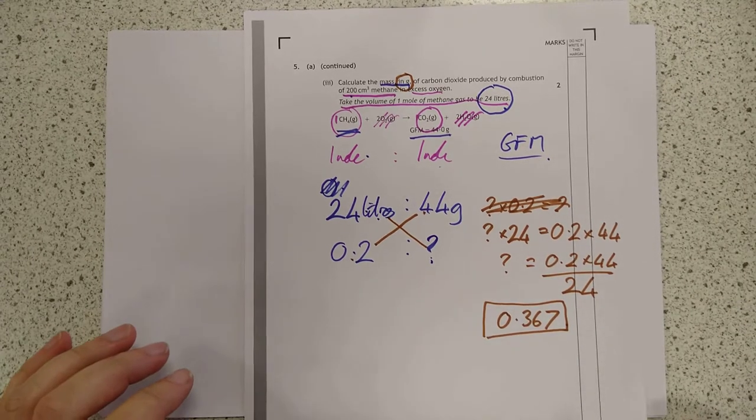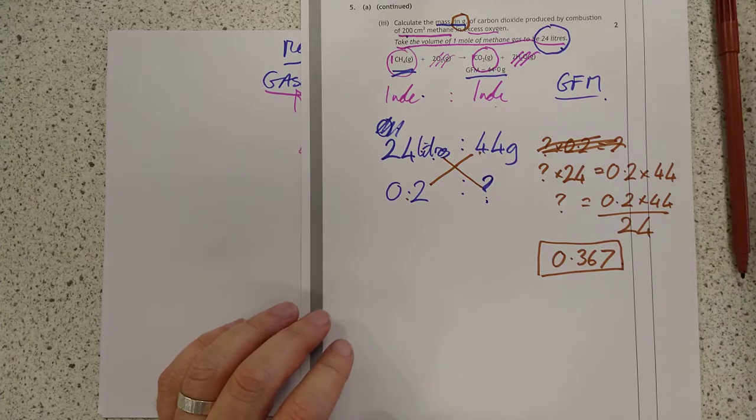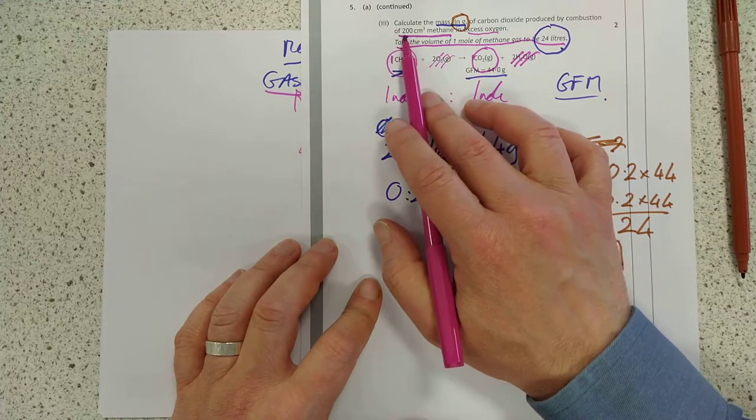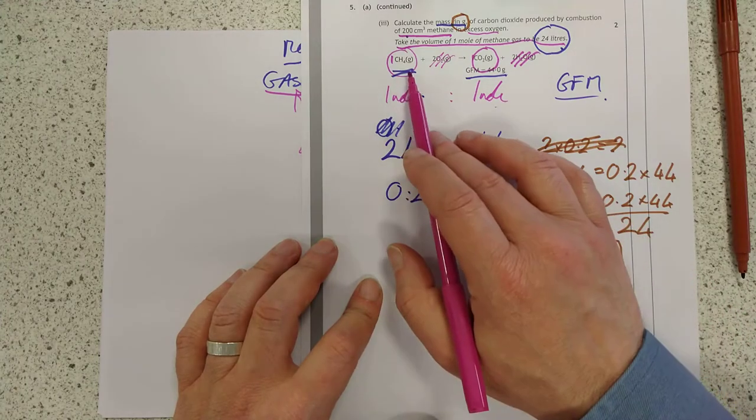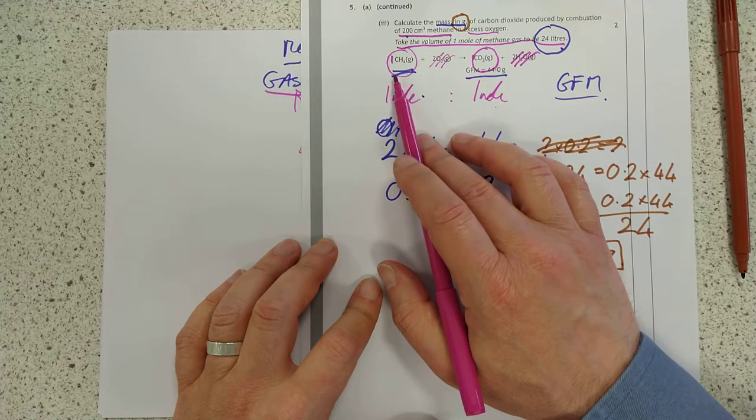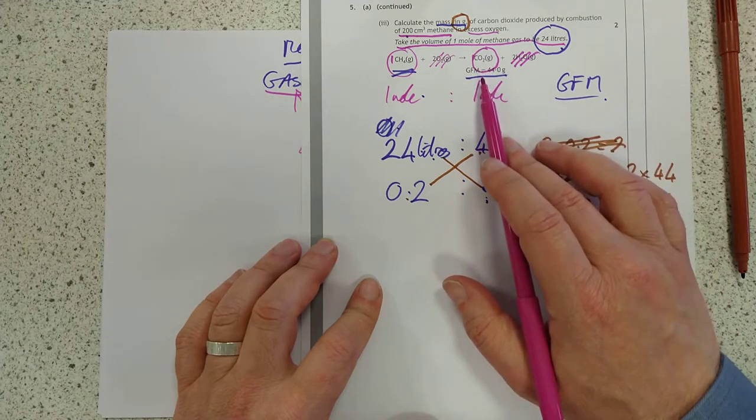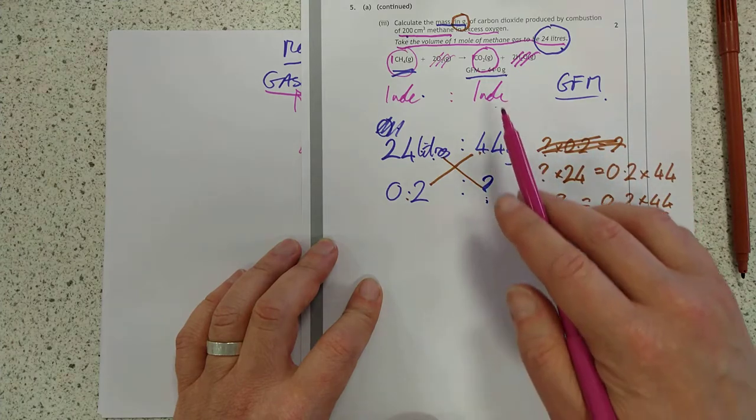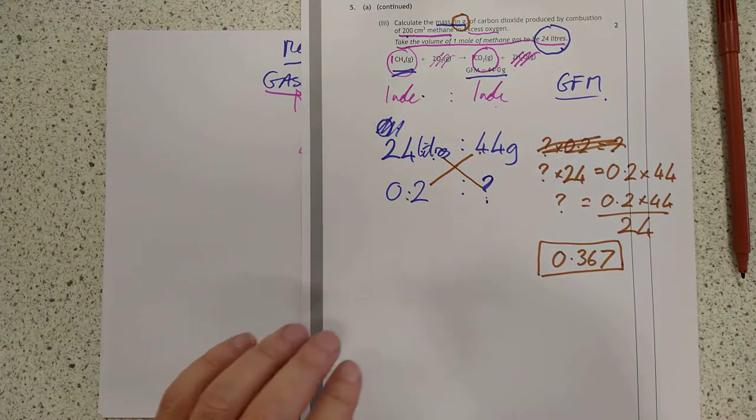Now, if you didn't like the whole proportion thing, no problem. Let me go through this a slightly different way. What I'm going to do now is I'm going to turn things into moles. So we have been given 0.2 litres of methane. Let's turn that into a number of moles. We can use the mole ratio again. And then we use moles mass and GFM. And out pops the same answer.